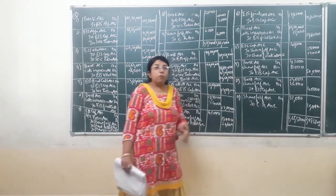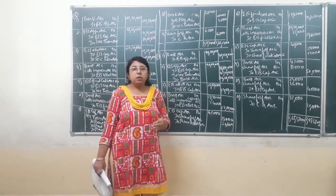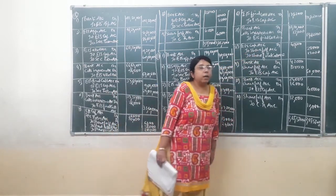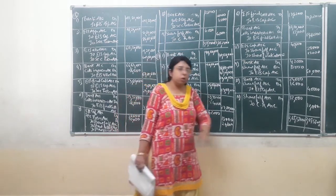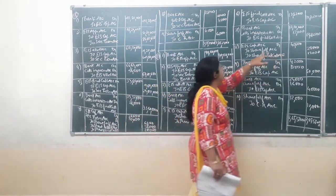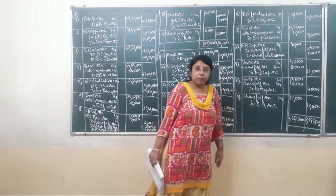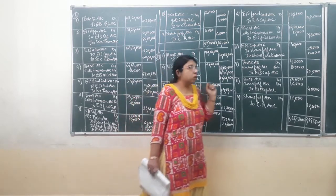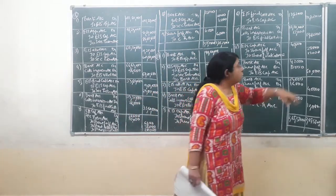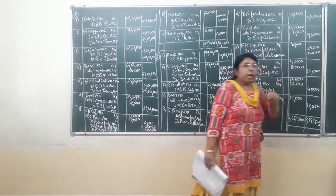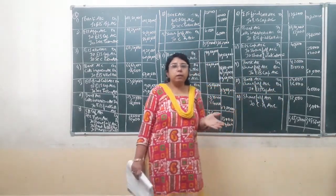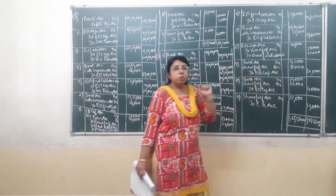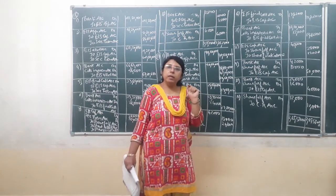Next is the forfeiture of shares held by JSA who has not paid the final call money due. Equity share capital account is debited for 4,000 shares multiplied by Rs. 10 per share, coming to Rs. 40,000. Share forfeiture account is credited: amount paid by JSA up till now is 4,000 shares multiplied by Rs. 7 per share, which comes to Rs. 28,000. Equity share final call account is credited for 4,000 into Rs. 3 equal to Rs. 12,000, which is the amount not paid by the shareholder, due to which the shares have been forfeited.